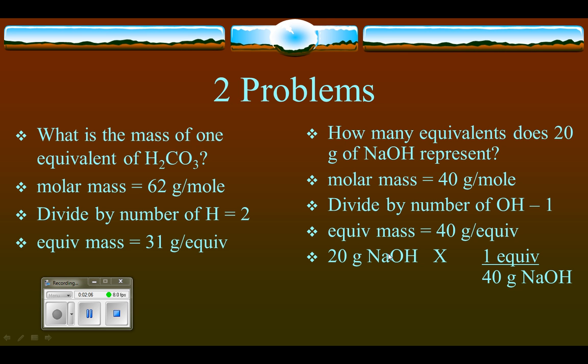Here's our given 20 grams. Our conversion factor is one equivalent is 40 grams. The answer is not on this slide, but if we take 20, then the grams cancel out here. 20 divided by 40 will be one-half or 0.5, so our answer is 0.5 equivalents of sodium hydroxide.